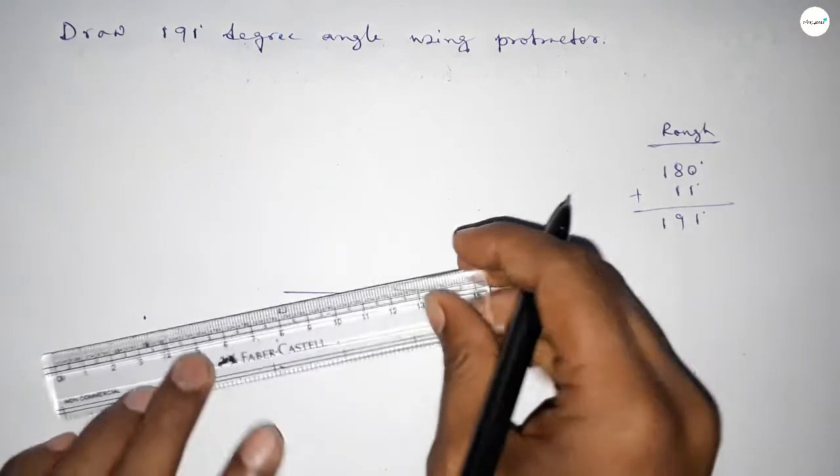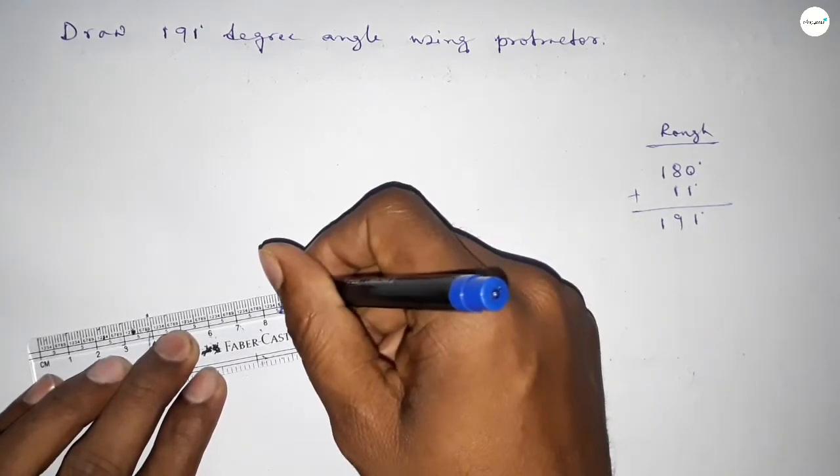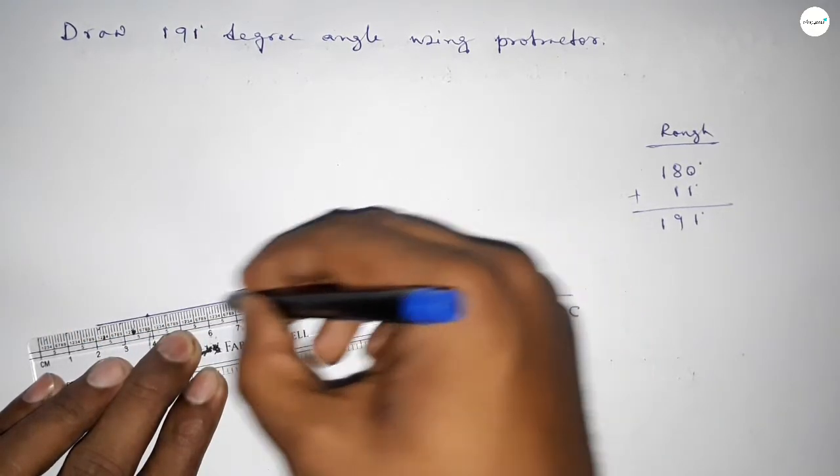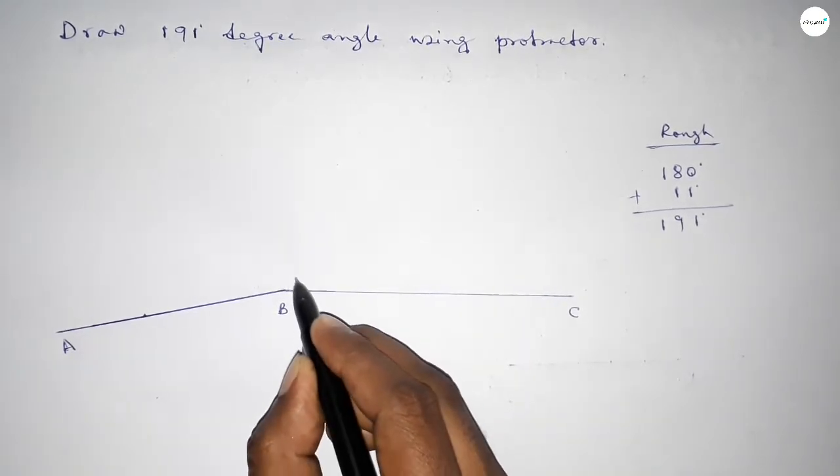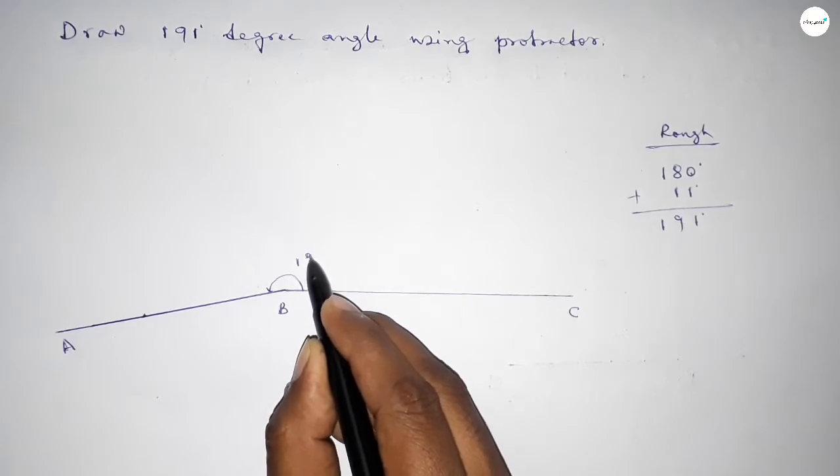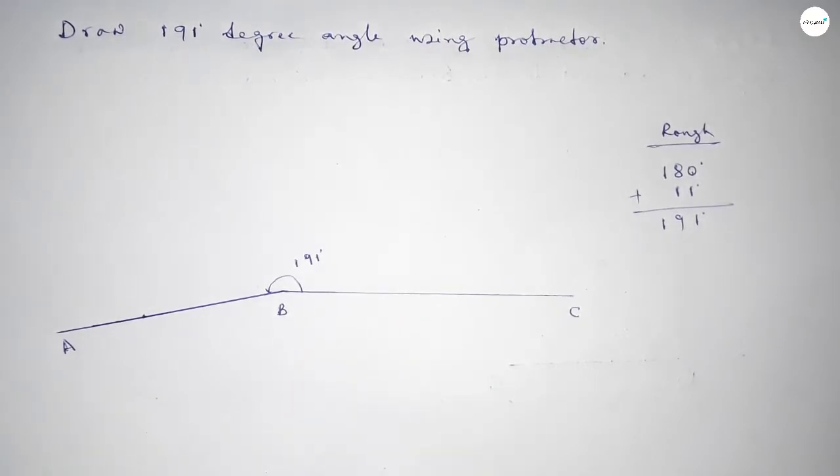So now joining this line and taking here point A. So angle ABC up to this is 191 degree angle. Therefore angle ABC up to this, so angle ABC equal to 191 degree angle.